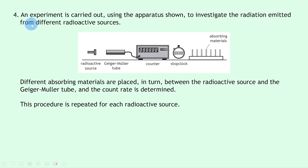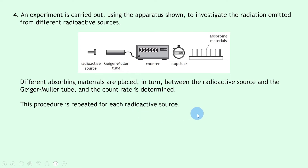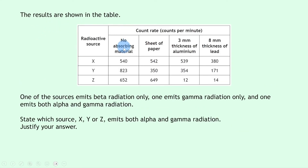Question four describes an experiment using similar apparatus to investigate radiation from different radioactive sources. We have a stop clock, absorbing materials, a counter connected to a Geiger-Müller tube, and a radioactive source. Different absorbing materials are placed in turn between the source and the tube, and the count rate is determined. This is repeated for three radioactive sources: X, Y, and Z. The table shows count rates for no absorbing material, a sheet of paper, 3 mm of aluminium, and 8 mm of lead.